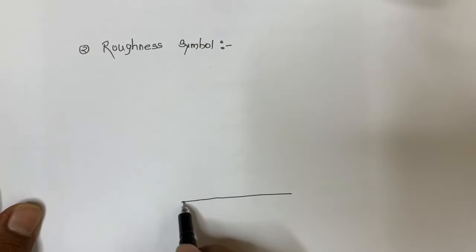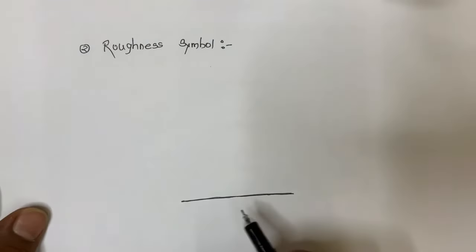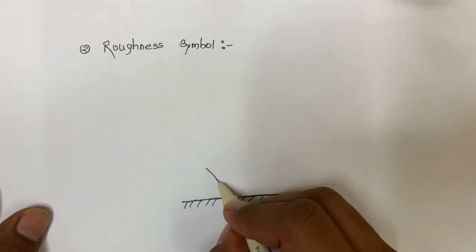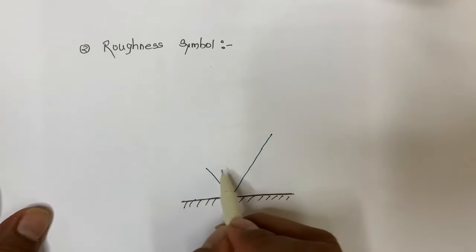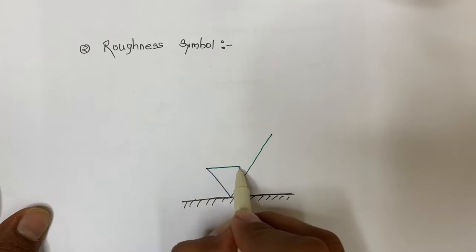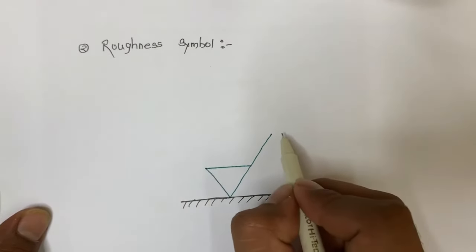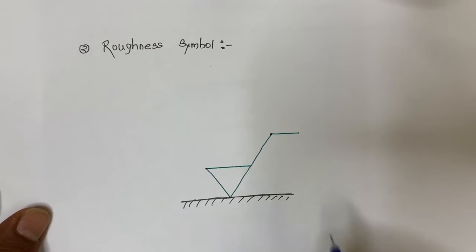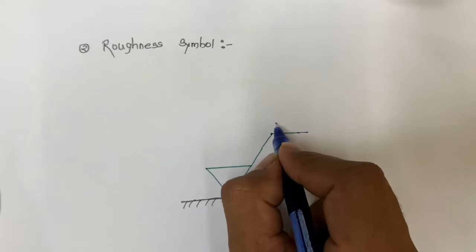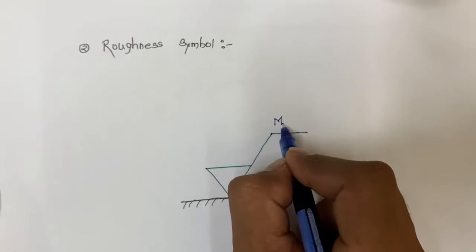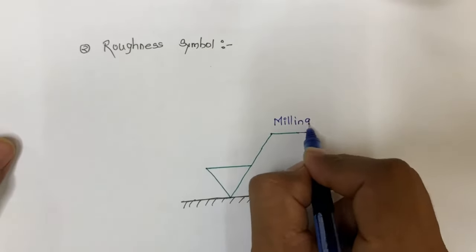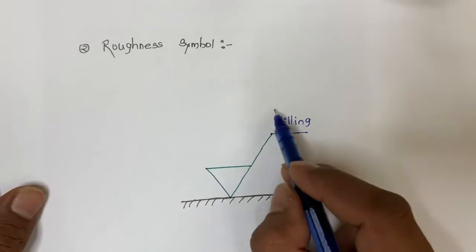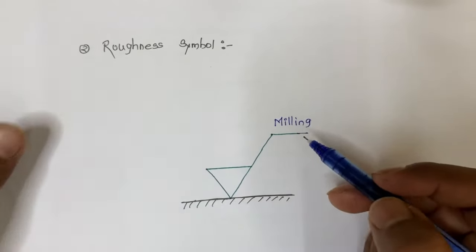Now we will draw the complete roughness symbol in detail. The surface whose characteristics need to be represented has two inclined lines drawn on it. Since this is a surface roughness representation, we add a horizontal line to the longer arm. On this horizontal line, the production process is specified — for example, milling may be required for this particular surface. Different production processes can be specified at this part of the symbol.